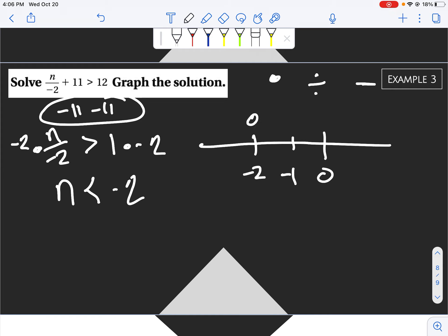So we have an open circle at negative 2, and n is less than negative 2. So our arrow needs to be going in the negative direction.